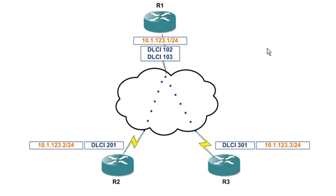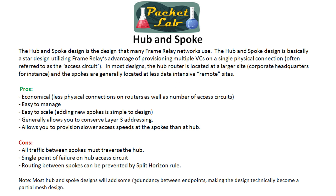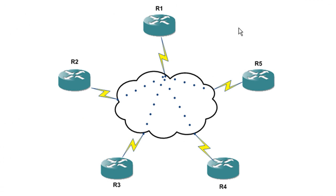We'll go through this in a lot more detail when we're going through routing with frame relay and also when we're actually configuring this. There are many ways around this in the routing protocols as well as in your design, whether you're using point-to-point sub-interfaces or physical interfaces. Just wanted you to know that is one of the disadvantages and something you're going to have to plan for when designing a frame relay hub and spoke network.